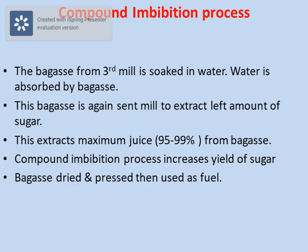Now we will see the compound imbibition process, which is used for maximum extraction of sugarcane juice. Here, the bagasse from the third mill is soaked in water, which is absorbed by the bagasse. This bagasse is again sent to the mill to extract the remaining sugar. This helps us to extract maximum juice from the bagasse — almost 95 to 99%. Compound imbibition thus helps us to increase the yield of sugar.